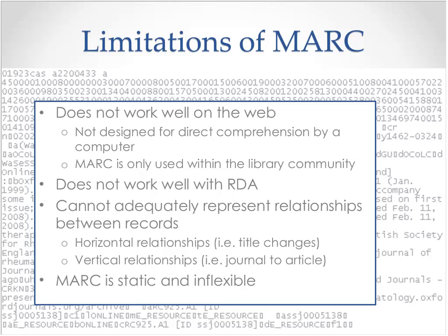Some of the challenges that users face in finding serial resources stem directly from the MARC format itself. Perhaps one of the greatest limitations of MARC is the fact that it doesn't work well on the web. MARC was designed in the 1960s for the creation and dissemination of cataloging between libraries — it wasn't invented to drive computerized information retrieval systems. Although there are a limited amount of machine-friendly data in fixed fields, most of the data in the MARC record is string-based and not designed for direct comprehension by a computer. Because the standard is only used within the library community, it has isolated library data from the rest of the world.